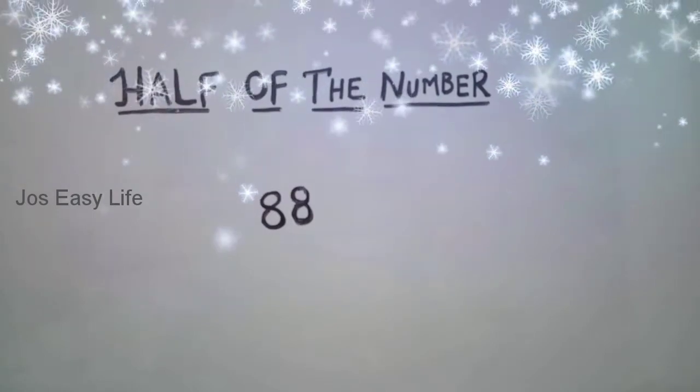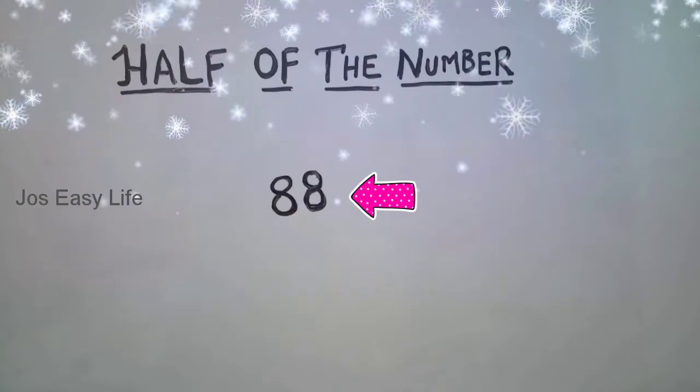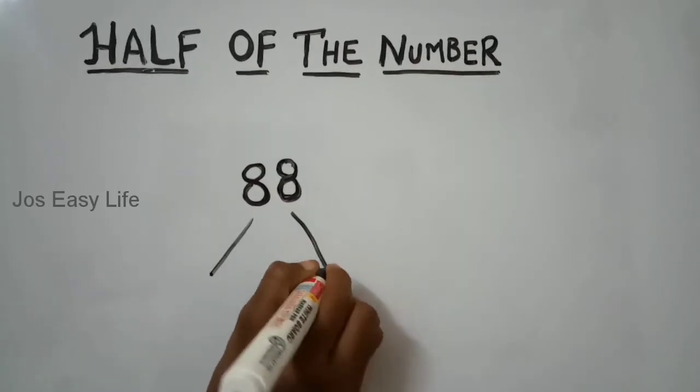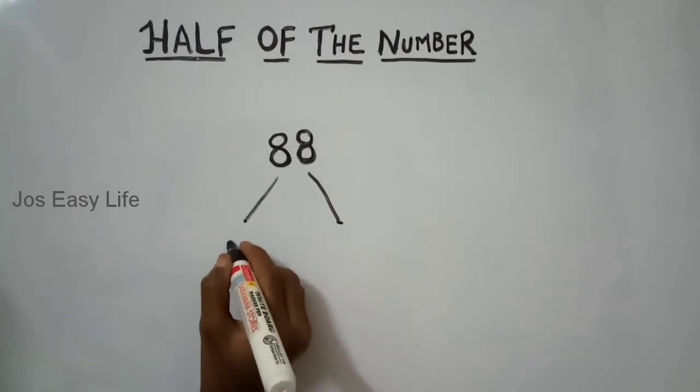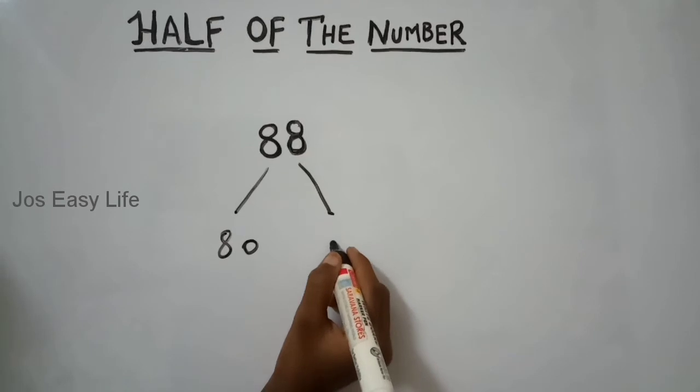Let's see another example. The number is 88. Now we have to split into 10's and 1's. 8 becomes 80 and 8 becomes 8.